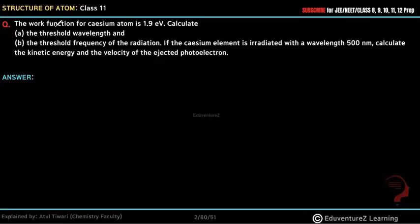Hello everyone. The work function of the cesium atom is 1.9 electron volt. Calculate the threshold wavelength and threshold frequency of the radiation. If the cesium element is irradiated with a wavelength of 500 nanometers, calculate the kinetic energy and the velocity of the ejected electron.